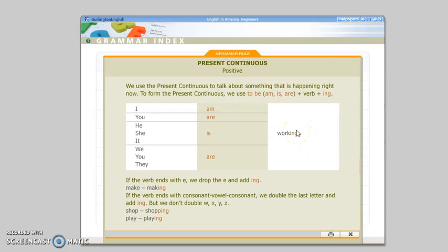When it first opens, it's going to give you the grammar rule. You can read over this as many times as you need to. In this example, we're talking about present continuous. Things like, I am working.